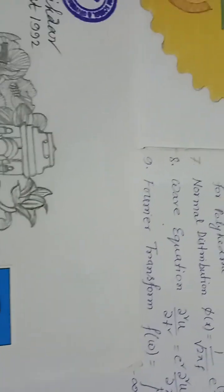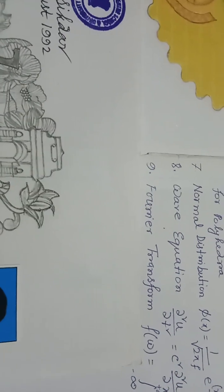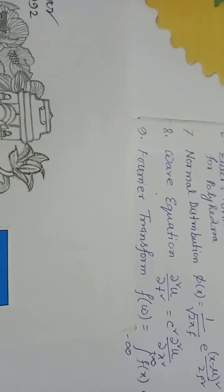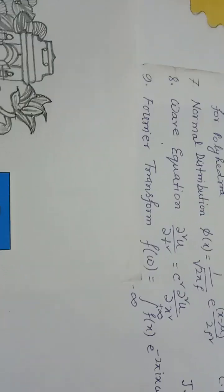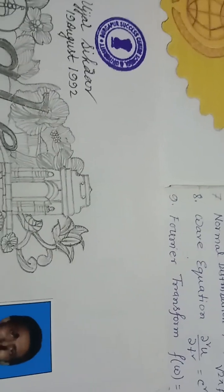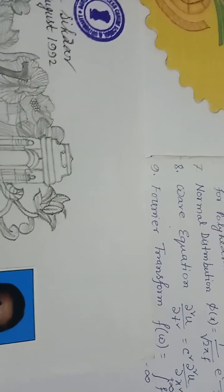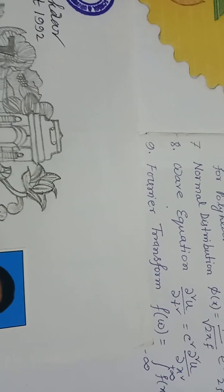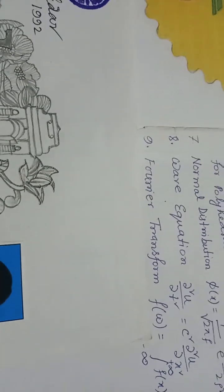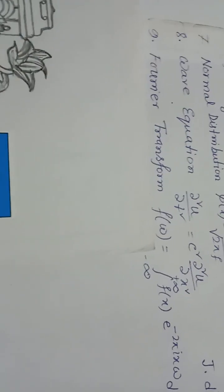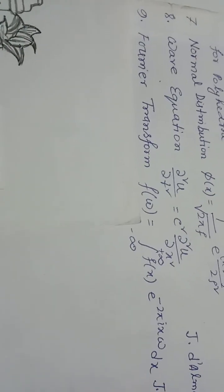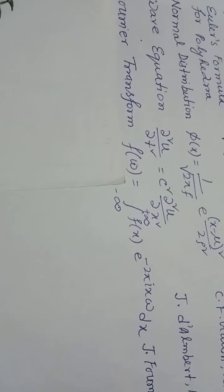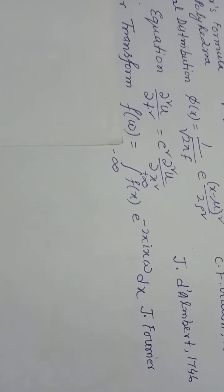Formula number 8, wave equation: ∂²u/∂t² = c²∂²u/∂x². J.D. d'Alembert, 1746. Formula number 9, Fourier transform: F(ω) = ∫₋∞^∞ f(x)e^(-2πixω)dx. J. Fourier.